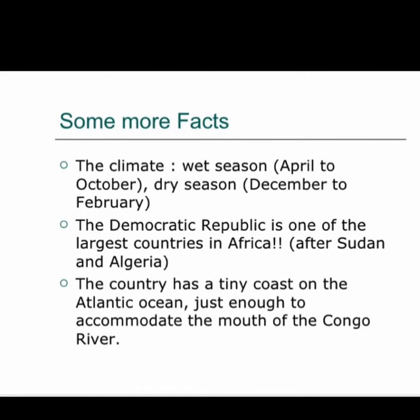Regarding the climate, the wet season is from April to October, whereas the dry season continues from December to February. The Democratic Republic of Congo is one of the largest countries in Africa after Sudan and Algeria. The country has a tiny coast on the Atlantic Ocean, just enough to accommodate the mouth of the Congo River.